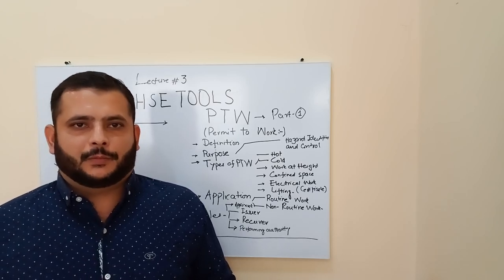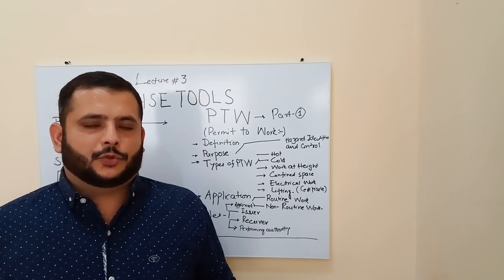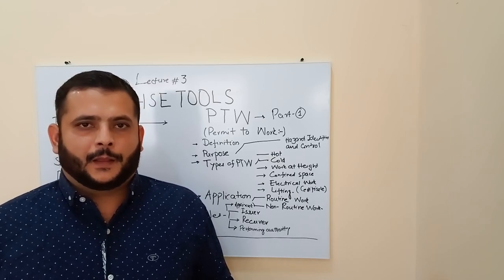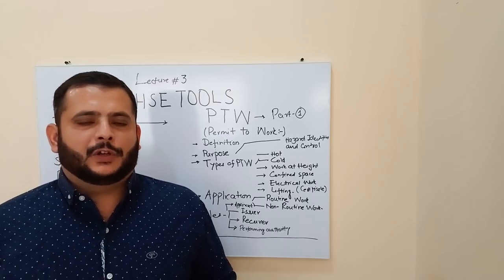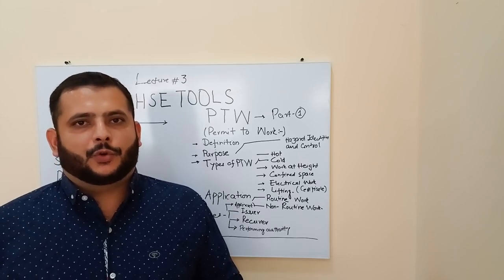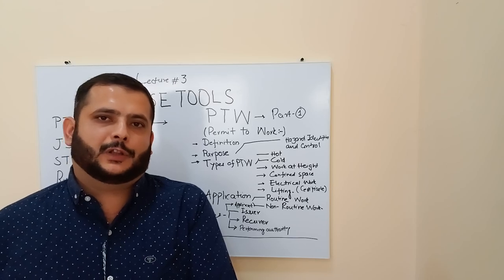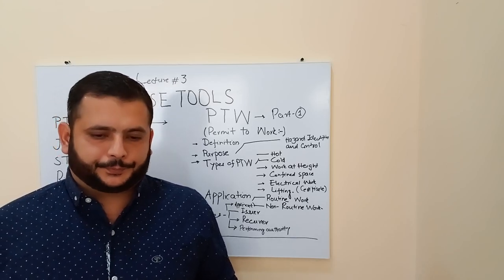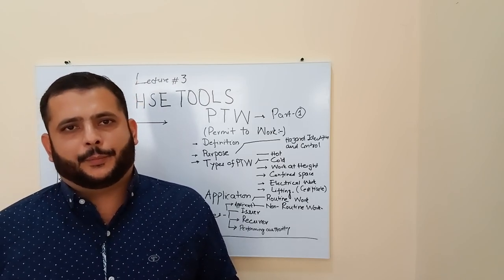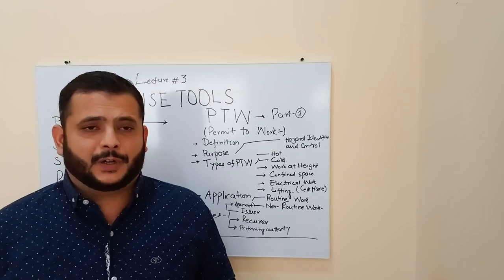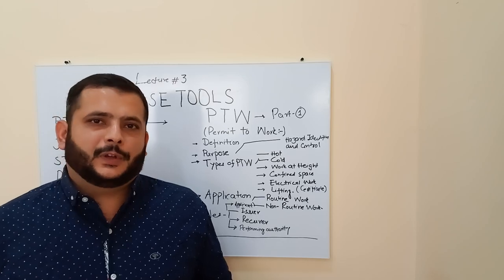This Permit to Work is a permission when you are doing some job in the oil industries. These jobs are very critical in operations — many persons are involved, many equipments are involved. When you are doing the job, you need to take a permission stating that you are doing a job at a specific location with specific equipment and a specific number of people. When you give this information to the higher authority, they will issue you a permit.